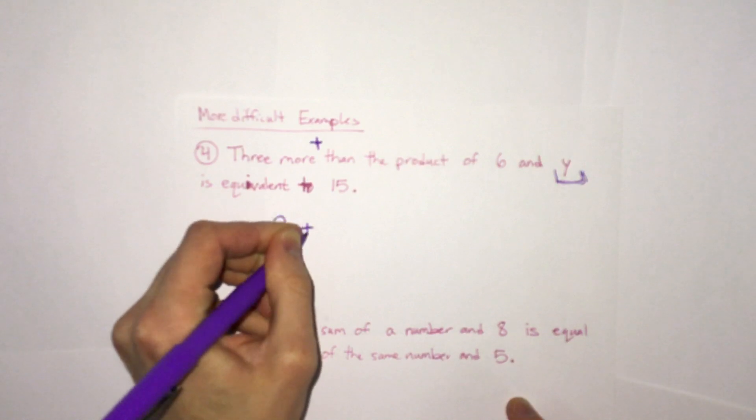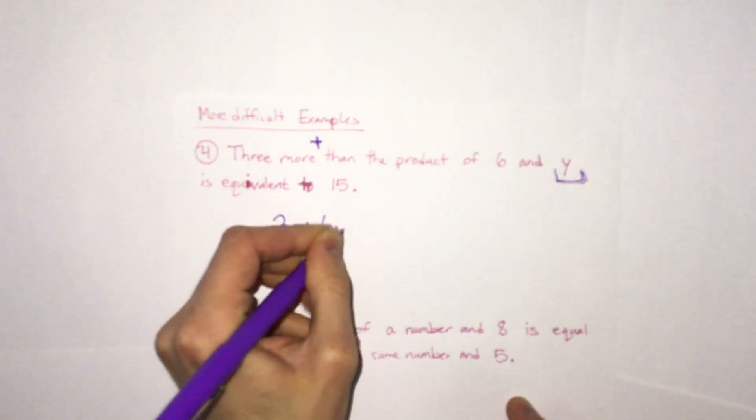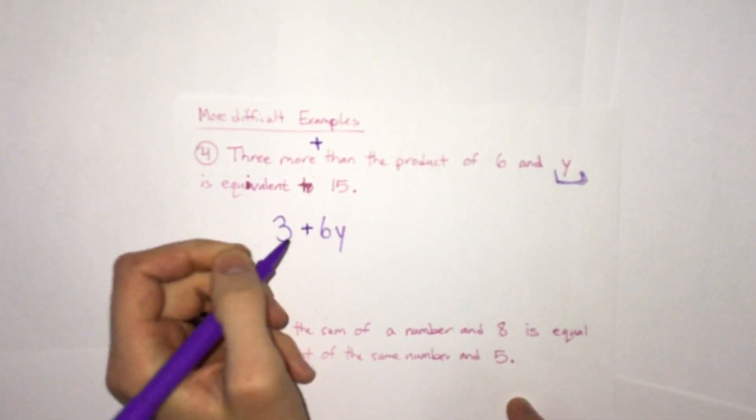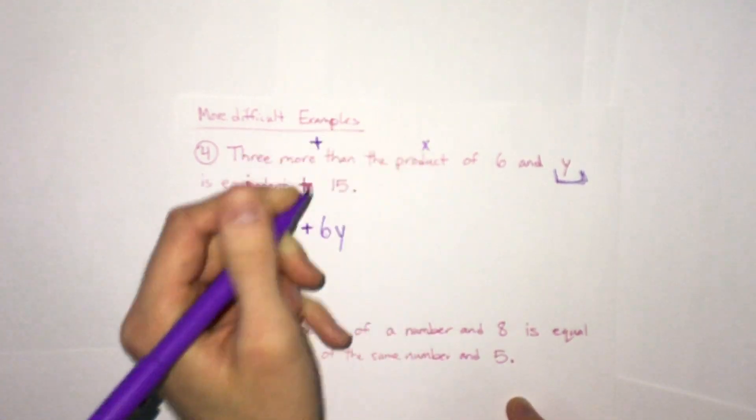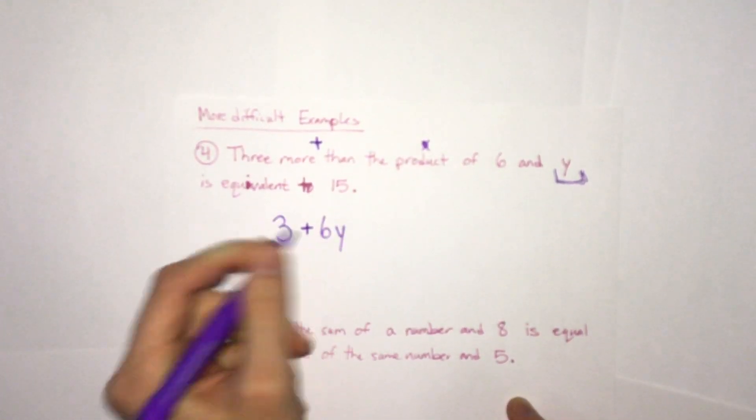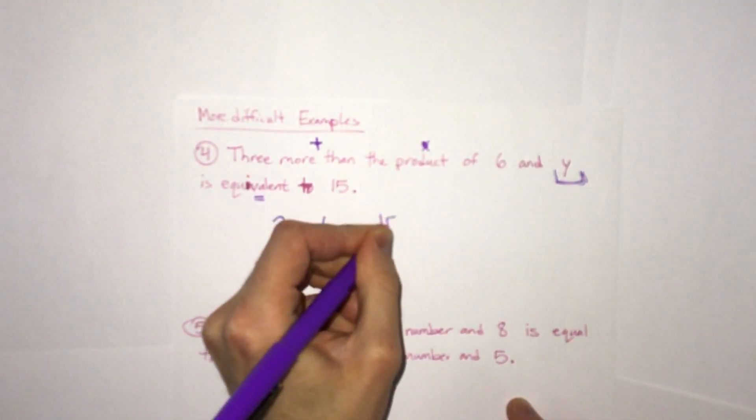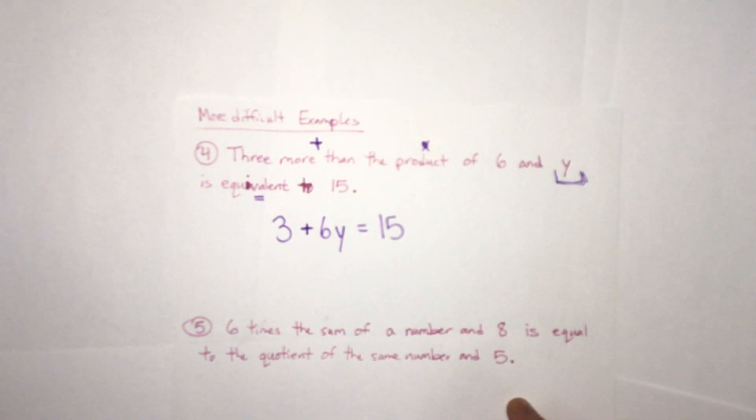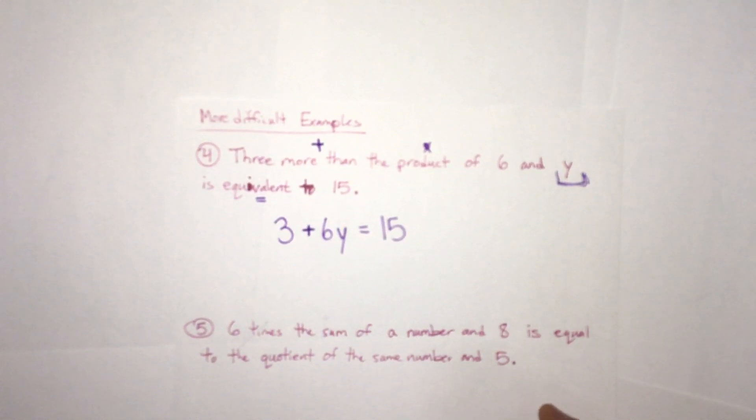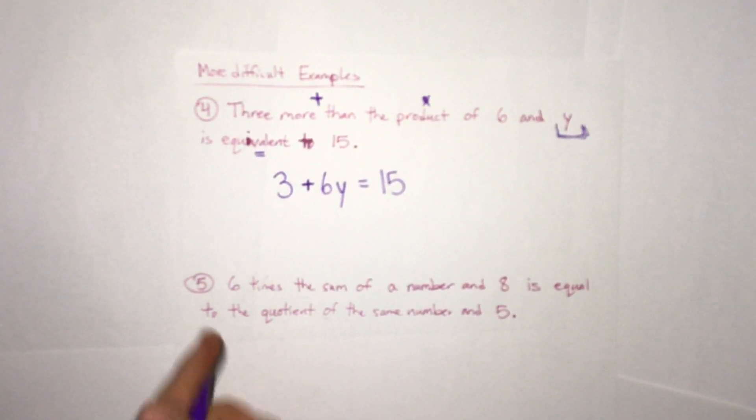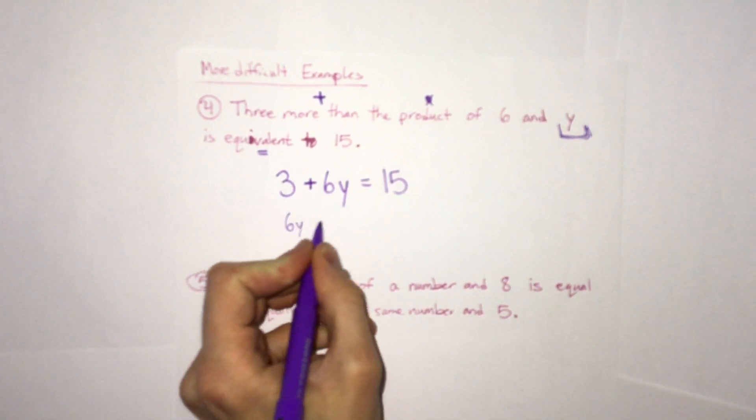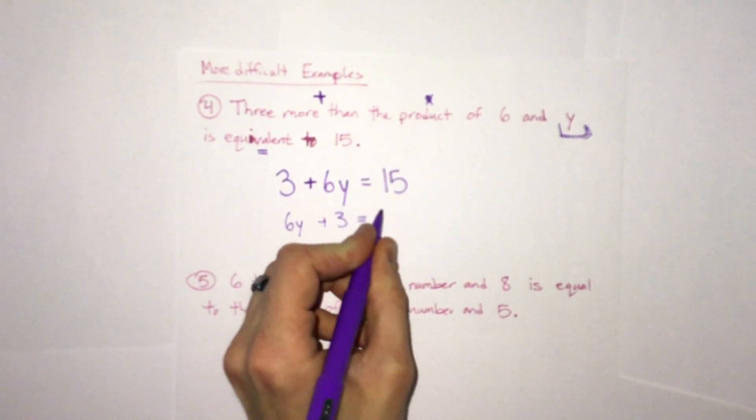So three more than, so three more than six and y, the product of six and y. So product is multiplying. So six times y is equivalent to, so that equals 15. Three plus six y equals 15. It's possible you could also write this as six y plus three equals 15.